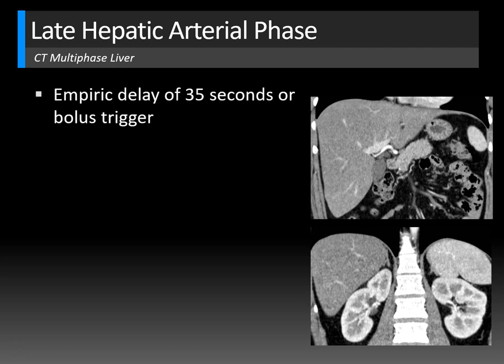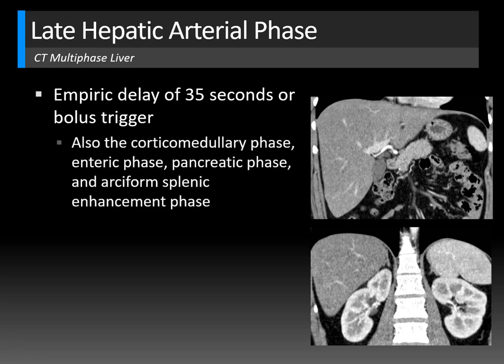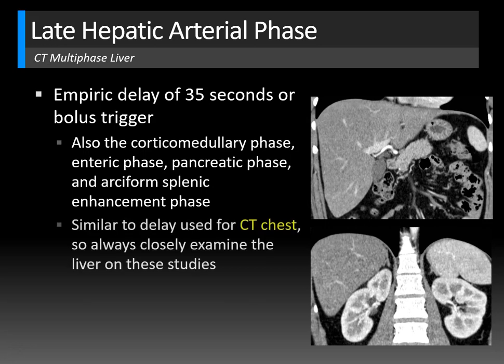The late hepatic arterial phase can be done with either an empiric delay of 35 seconds, a fixed delay after contrast injection, or a bolus trigger evaluation — similar to what we'd do with an angiogram — where you inject a small amount of contrast to determine the optimal phase of enhancement. This is the same as the corticomedullary phase, as well as the enteric phase, the pancreatic parenchymal phase, and the phase where you see arciform splenic enhancement — that tiger stripe appearance of the spleen. Notably, this 35-second delay is similar to the delay many centers use for a CT contrast chest evaluation, so it's a good idea to look at the liver whenever you're reading a chest CT with contrast.